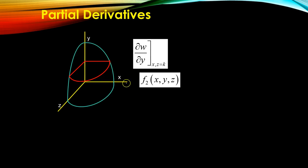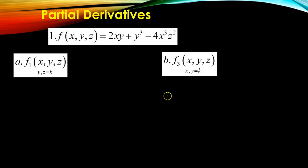Similarly, you might be asked to solve for the partial of w with respect to y, or it can be written as f of x, y, z with a 2 at the bottom, meaning the partial derivative of the function f(x, y, z) with respect to the second variable, which is y.